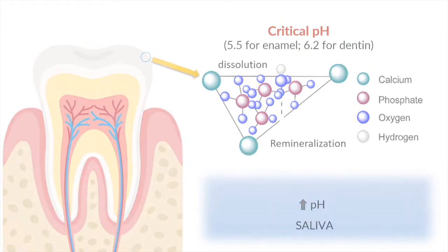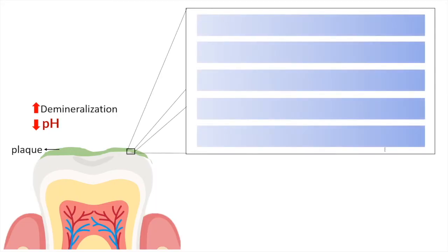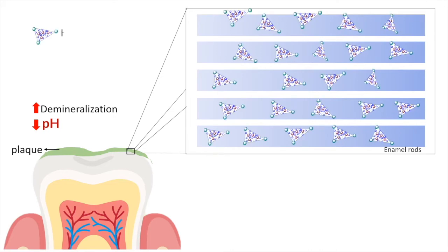Now taking a microscopic look at situations which induce plaque formation, herein the pH decreases due to the accumulation of plaque. Demineralization increases and the plaque enters the enamel rods.